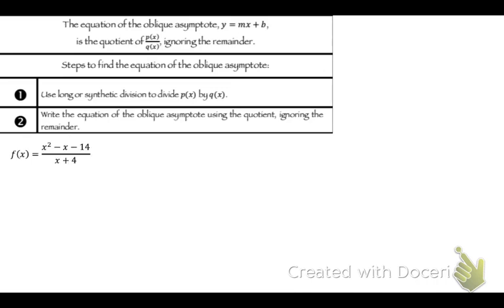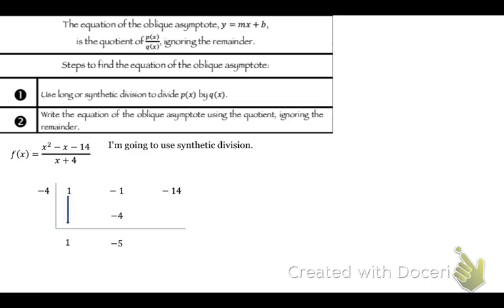Say we have f(x) equals x-squared minus x minus 14 over x plus 4. Let's find the oblique asymptote. I'm going to use synthetic division, dividing by x plus 4, so negative 4 on the outside. Bring down the 1, multiply, add, multiply, add. The only thing is you ignore the remainder. So my oblique asymptote here is y equals x minus 5. Simple as that.